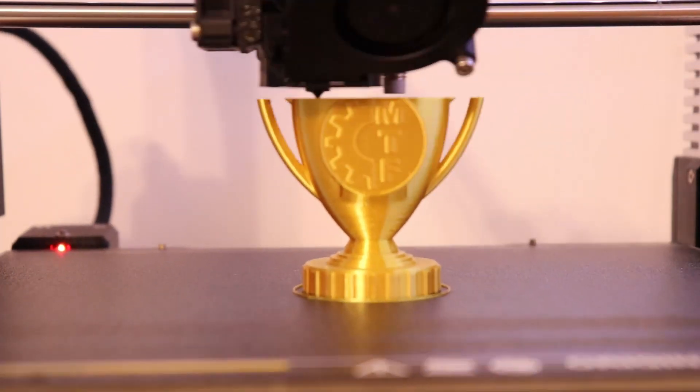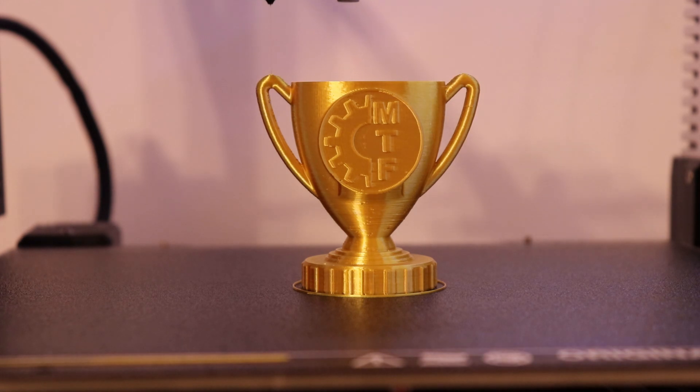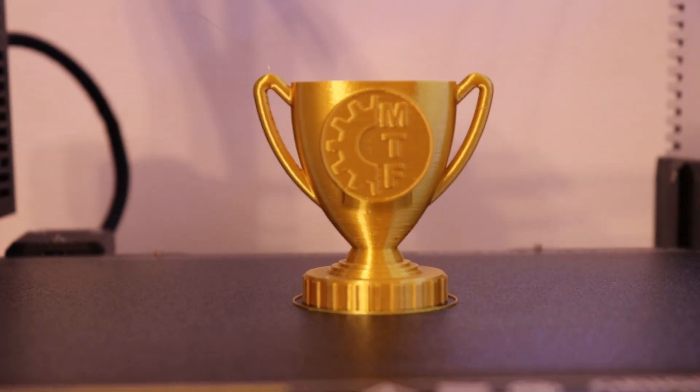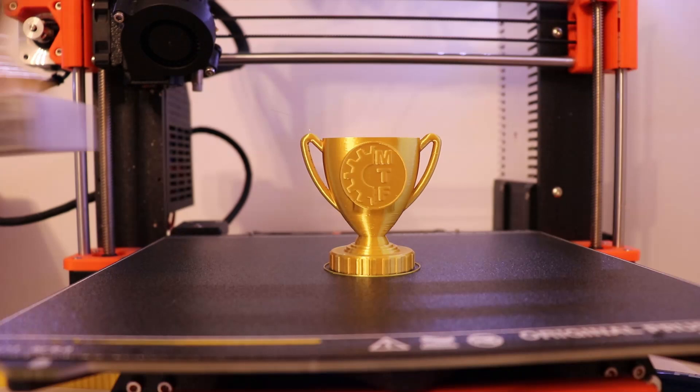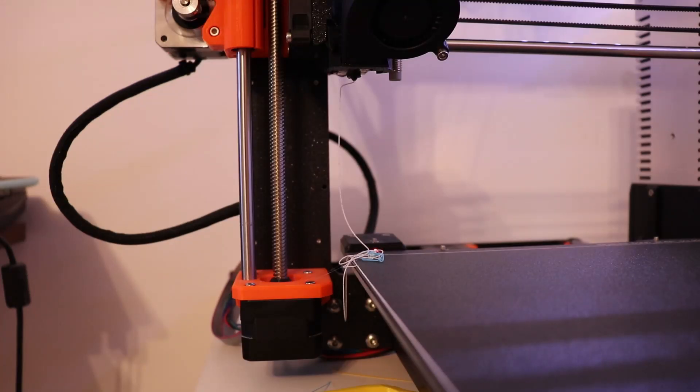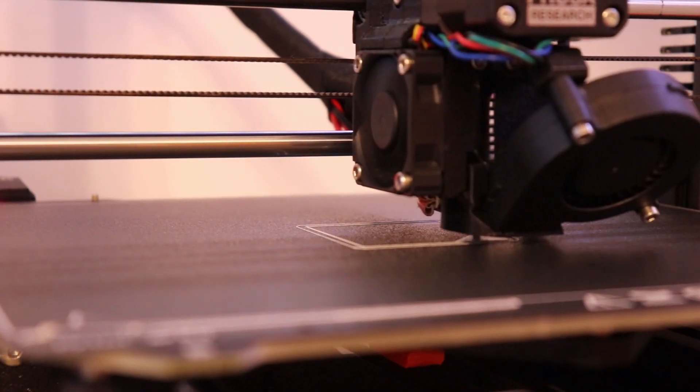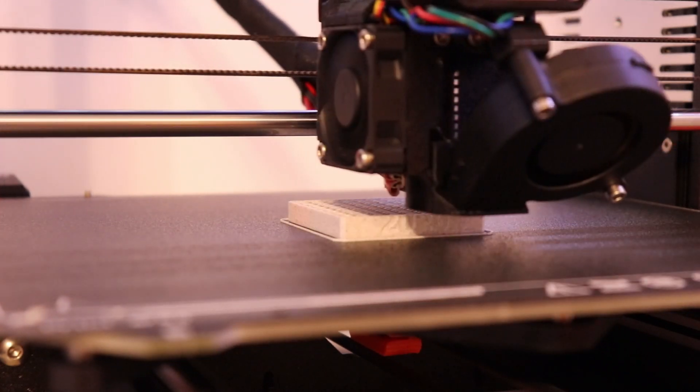And since I wasn't sure that these two materials will stick to each other, I printed them separately and I will just glue them at the end. So this is the upper part, the gold color. And here they are side by side.